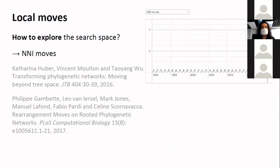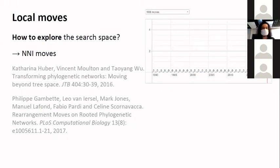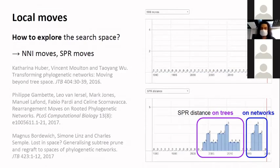Once you know your search space, how do you walk in it? How do you explore it? Traditionally on trees you have NNI moves, meaning you exchange some branches to change the topology and get another candidate where you compute the likelihood. It was defined as well for networks by Cathy Huber and her co-authors in 2016. We proposed maybe an easier definition one year later with co-authors from Montpellier and the Netherlands. We also proposed an extension of SPR moves, which was also done independently by Bordewich, Linz and Semple in New Zealand.